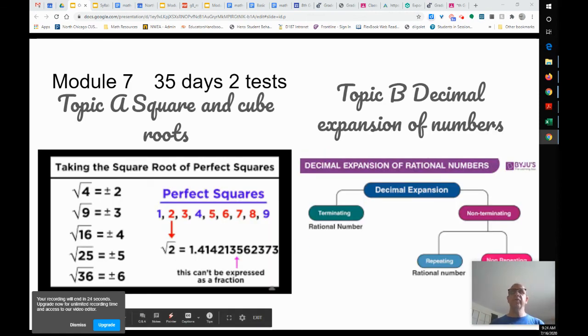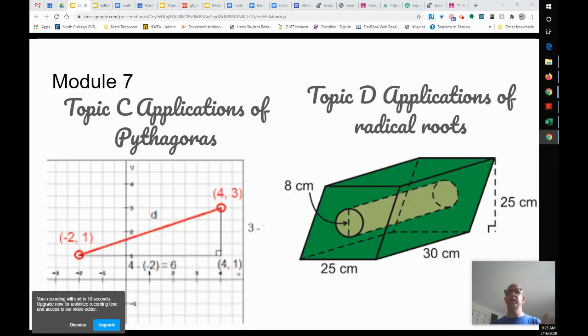And then module seven, 35 days, two tests. We're going to talk about square roots and perfect squares and cubes. Then we're going to expand these things into decimals and terminating and non-terminating decimals. Then we're going to look at the applications for Pythagoras and then applications for radical roots, Pythagoras in the real world.